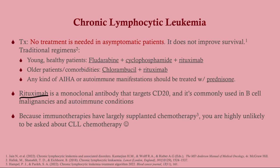One thing that may be tested is rituximab. Rituximab is a monoclonal antibody that targets CD20, which is expressed in CLL, making it a very useful medication. It is commonly used in B-cell malignancies because they tend to express CD20. It's also used in autoimmune conditions — essentially we are selectively targeting and depleting all the B cells.